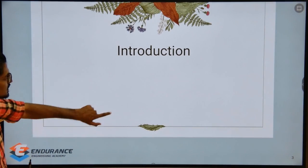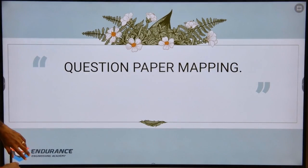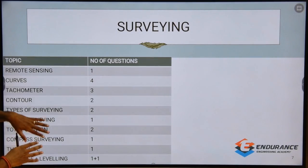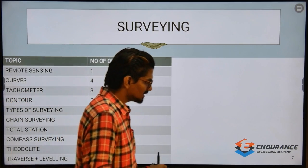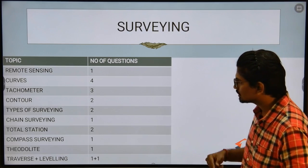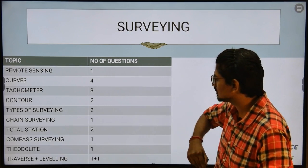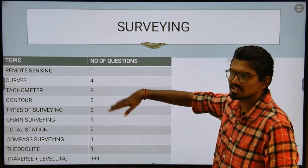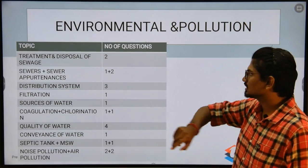Our primary goal is to find out the question paper mapping — which means finding out how the marks are distributed. Looking at the mark distribution, you can see the areas clearly. Surveying includes curves, tachometry, contours, and types of surveying — this is from the recent JDO last year paper.